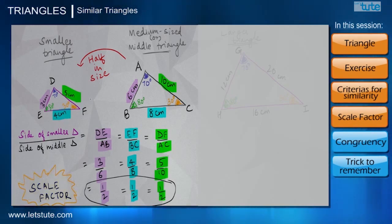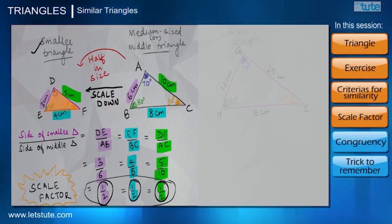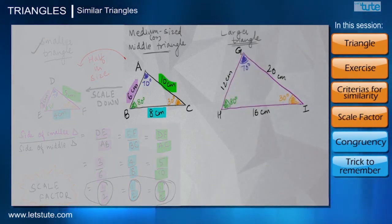So as part of geometrical terminologies, we can say in this case we are performing a scale down on triangle ABC by a scale factor of 1 upon 2 to get a smaller triangle DEF.